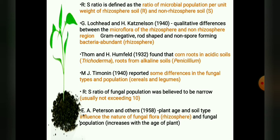In 1940, M. J. Timonin reported some differences in the fungal types and population in the rhizosphere of cereals and legumes. The RS ratio of the fungal population was believed to be narrow in most plant species, usually not exceeding 10.